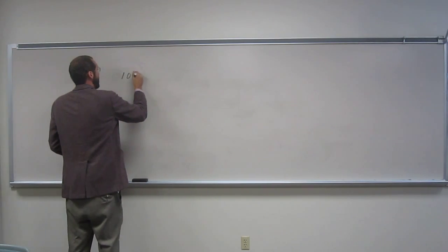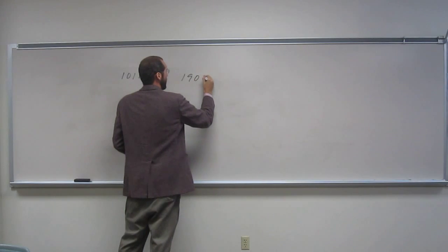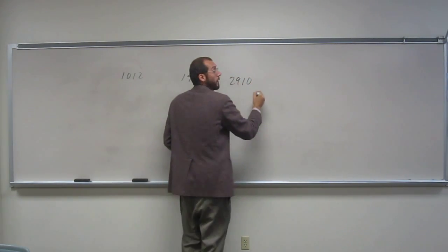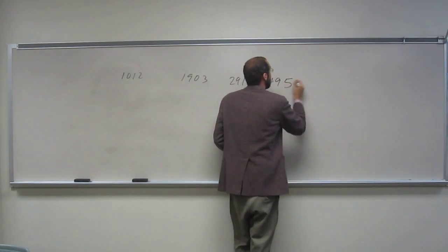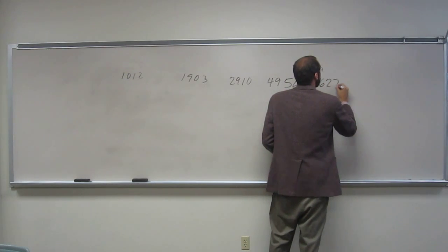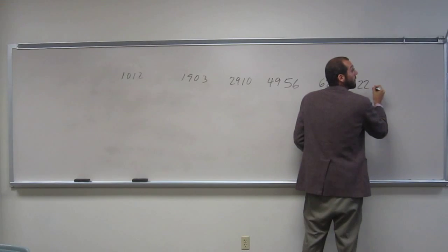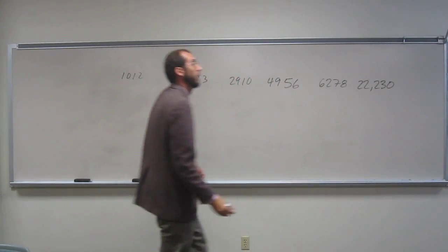So the ionization energies are 1012, 1903, 2910, 4956, 6278, and 22,230. Okay?